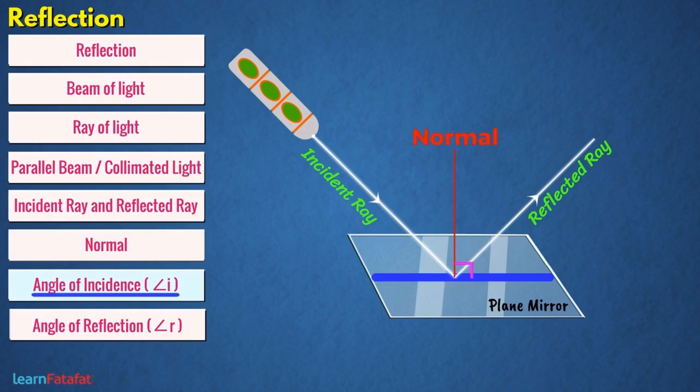Angle of incidence, angle of reflection: the angle made by the reflected ray with the normal is called angle of reflection.